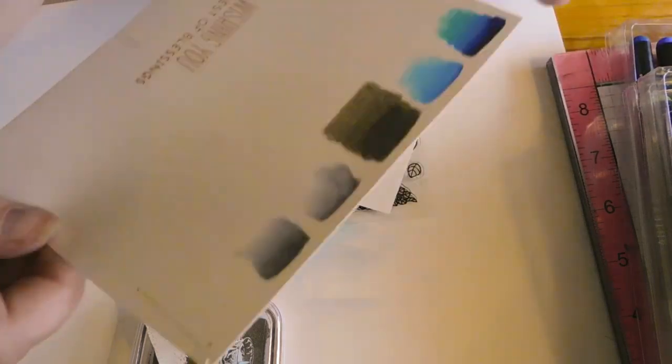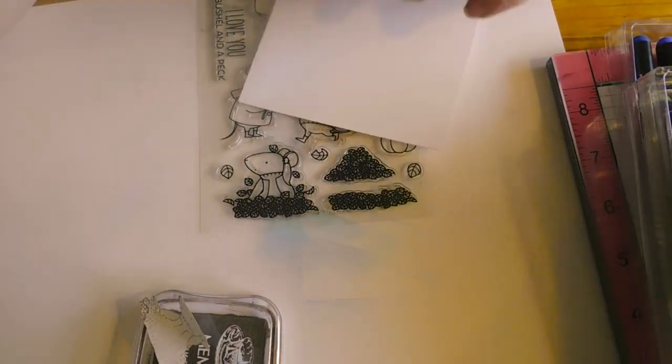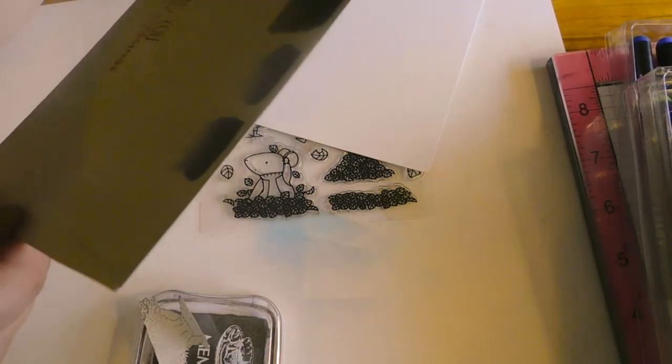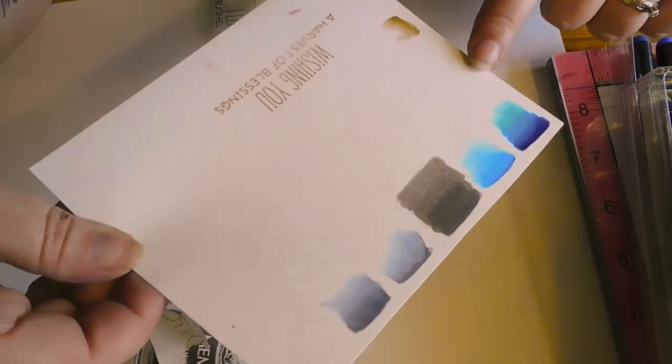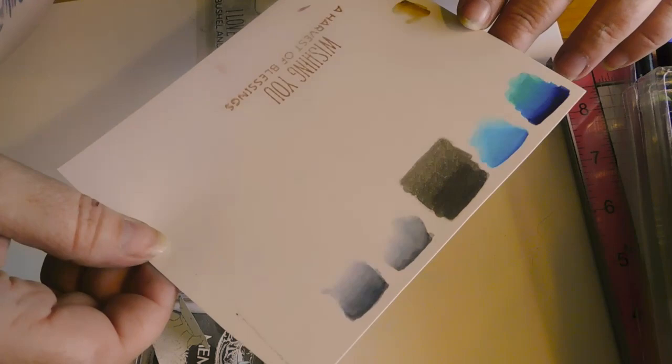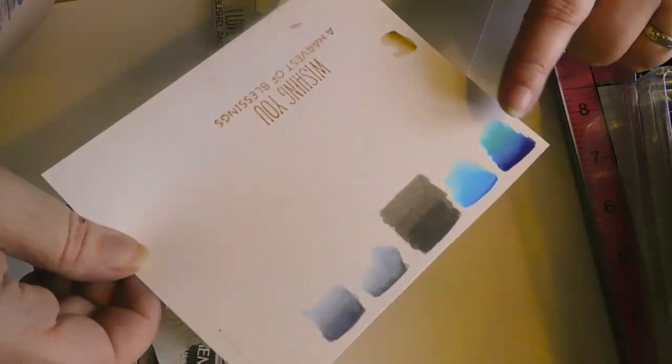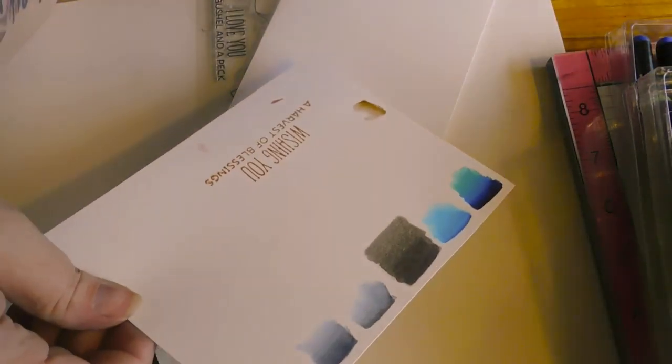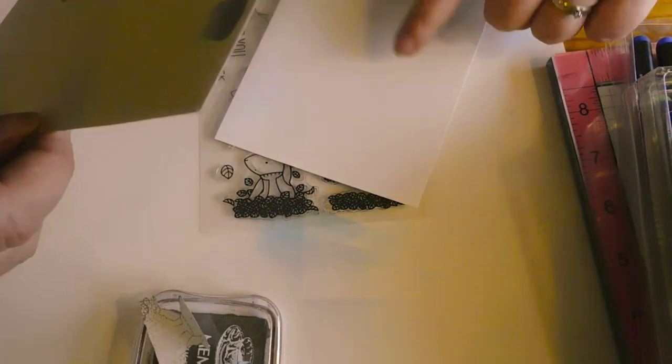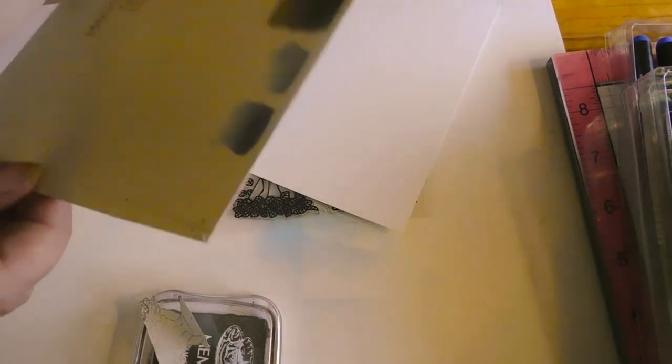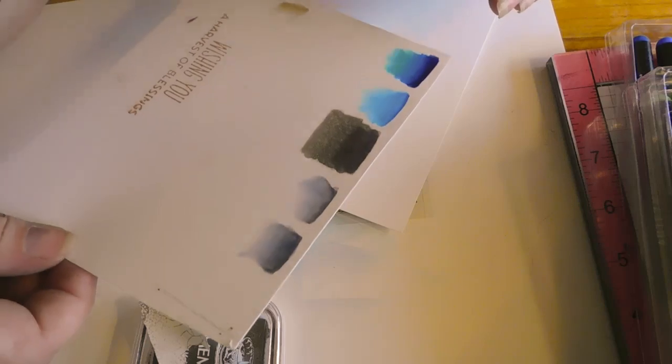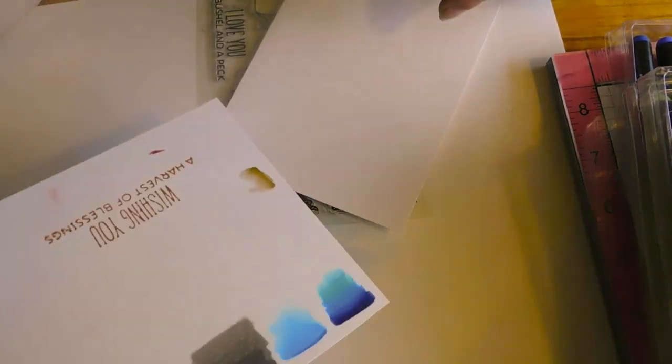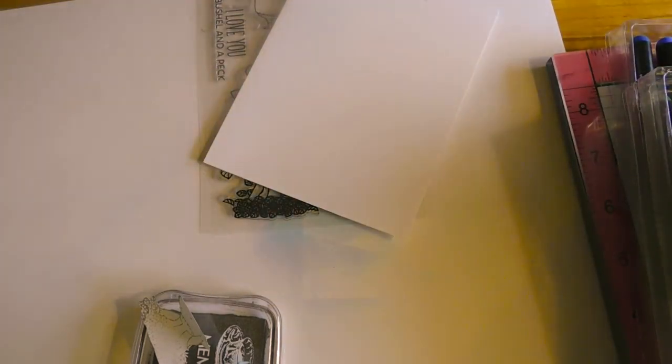Now one thing I do keep handy when I'm playing with a mixed media project, or any project for that matter, whatever paper I'm working on, I keep a scrap piece of that paper on the side to swatch out my colors and markers and pencils and stuff before I take it directly to the piece I'm working on. That way, if it's not the right color that I want, well, then I didn't just put it on my finished piece and have to start over.